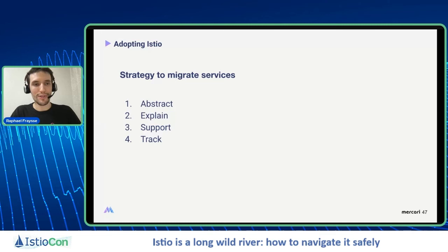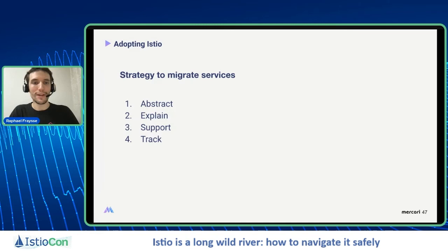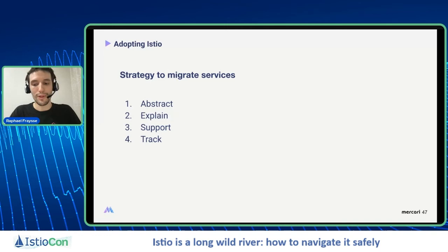Our strategy to migrate services has four items: abstract, explain, support, and track. Abstract is about making abstractions to roll out behind-the-scenes changes so users don't see them. Explain is about communicating the changes facing users and the motivation behind them. Support is about facilitating service owners by preparing pull request campaigns for Istio-enabled services so they don't have too much work. And tracking is about keeping the inventory of services by status — for example, having a cluster IP service or Istio enabled — so you can track adoption progress.